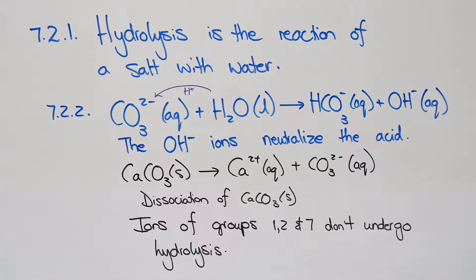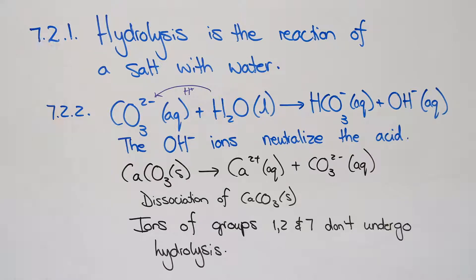7.2. Acid rain does not cause damage to lakes that have rocks containing limestone, which is calcium carbonate. Hydrolysis of calcium carbonate results in the formation of ions which neutralize the acid. 7.2.1: Define hydrolysis of a salt. Hydrolysis is the reaction of a salt with water. That is the definition — they love to ask this, so please make sure that you know it.